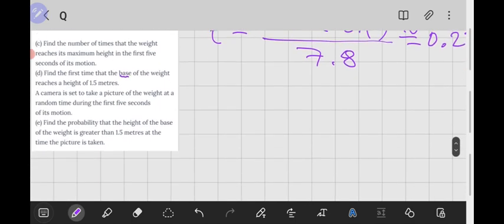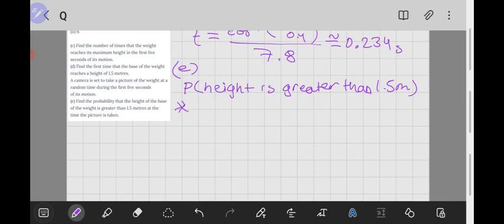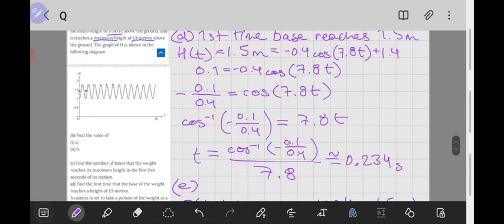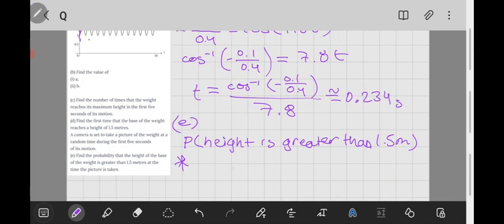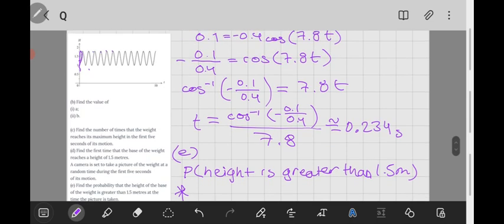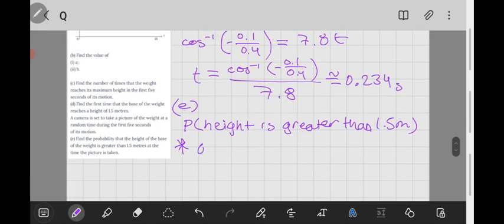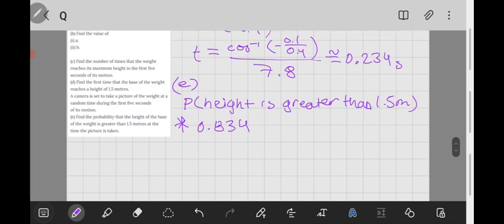And now for the next question, we're asked to find the probability that the height of the base of the weight is greater than 1.5 meters at the time the picture is taken. And we're also given additional information where a camera is set to take a picture of the weight at a random time during the first five seconds of its motion. So note that if we look at the graphical representation, what we can essentially do is say that the second time our function or our weight will be at 1.5 meters would be our period 0.805